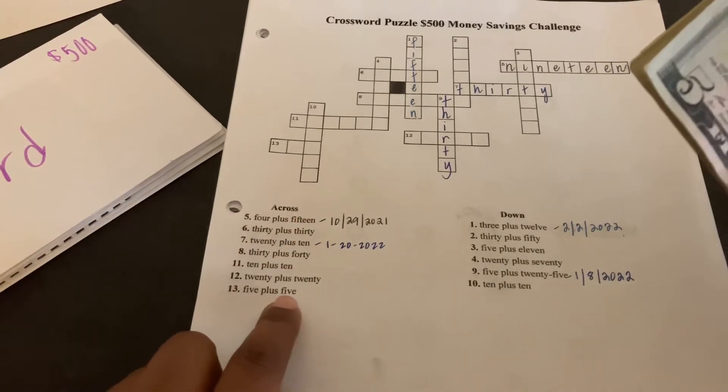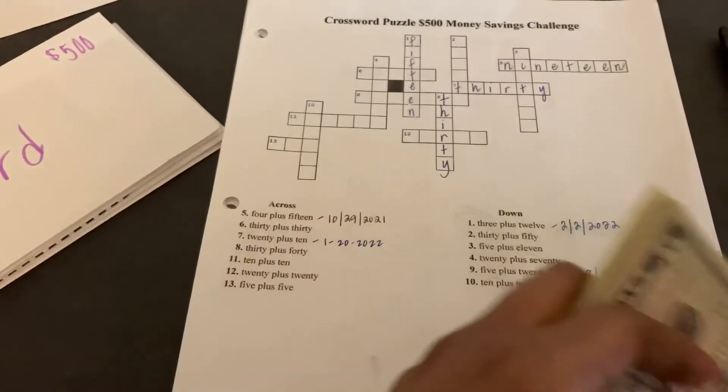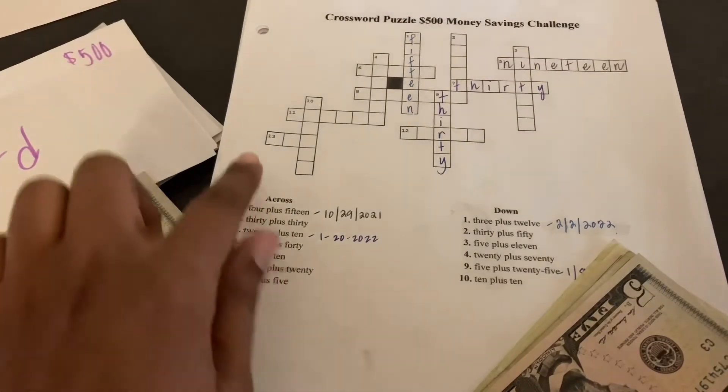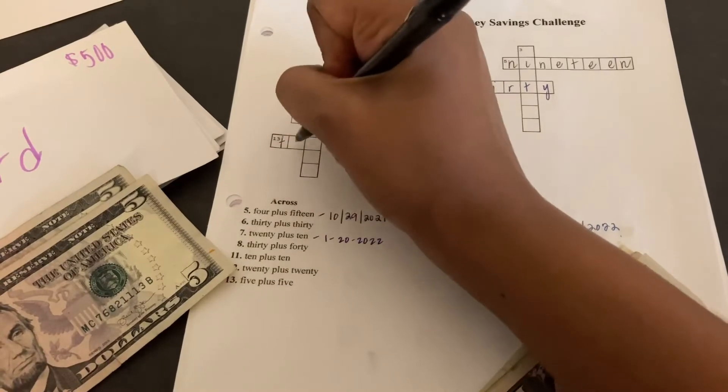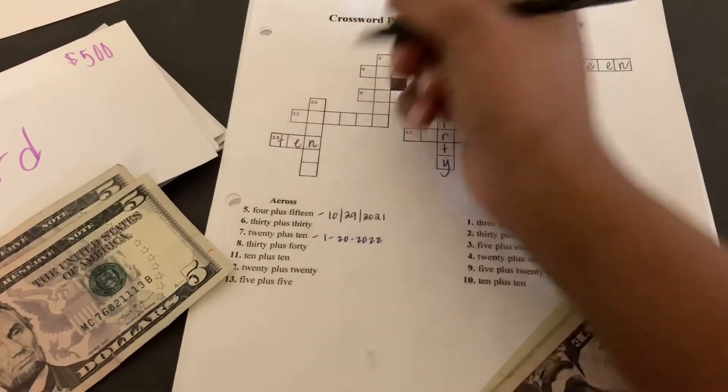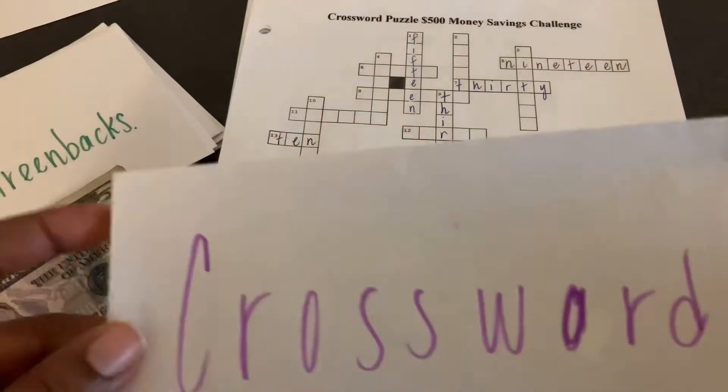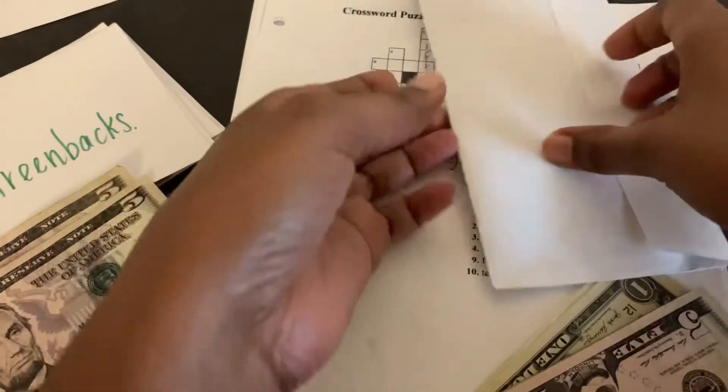And so what I think, since I only have $20, I'm going to do 13 across, which is 5 plus 5, so that means $10 will go towards this challenge. And then what I do is I just find 13 across and I write in the word 10. So I have 10 there, and I do have just a regular envelope, and I already have some money saved.